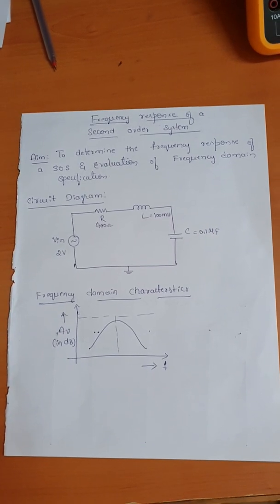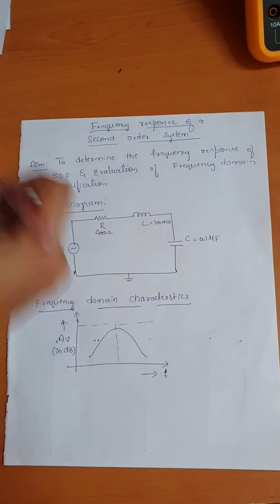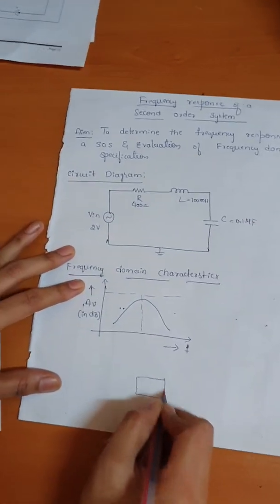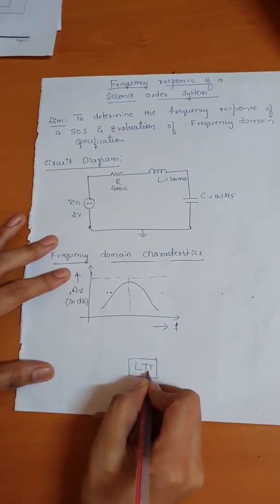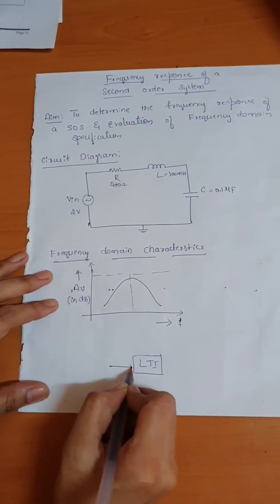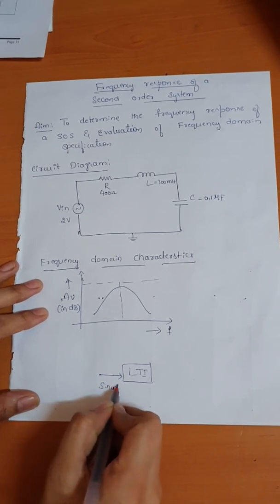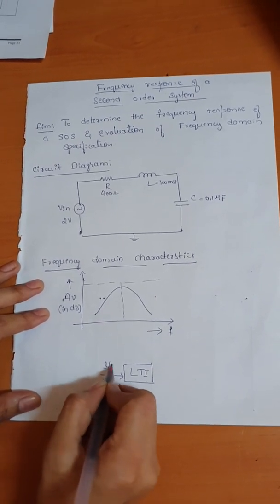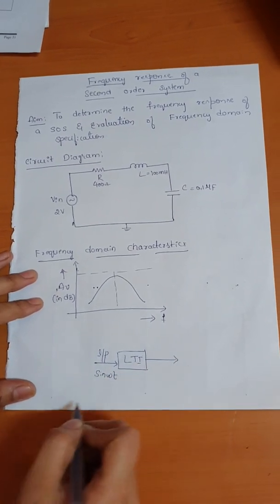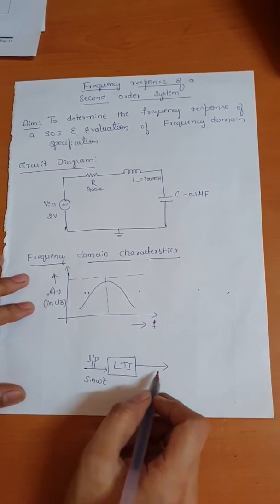Let us consider one LTI system, that is a linear time invariant system. For this system, if you give a sinusoidal input — it may be sine of ωt or cosine of ωt — you are going to produce a sinusoidal output, but the output will be different.